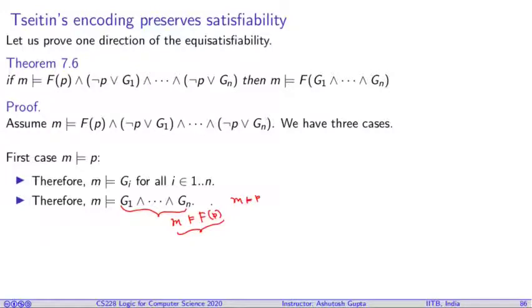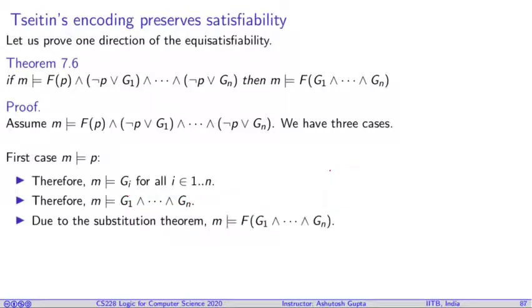Therefore, we can apply substitution theorem and we can say that M satisfies F(G₁ ∧ ⋯ ∧ Gₙ). So by applying substitution theorem, you conclude that M satisfies the original formula.